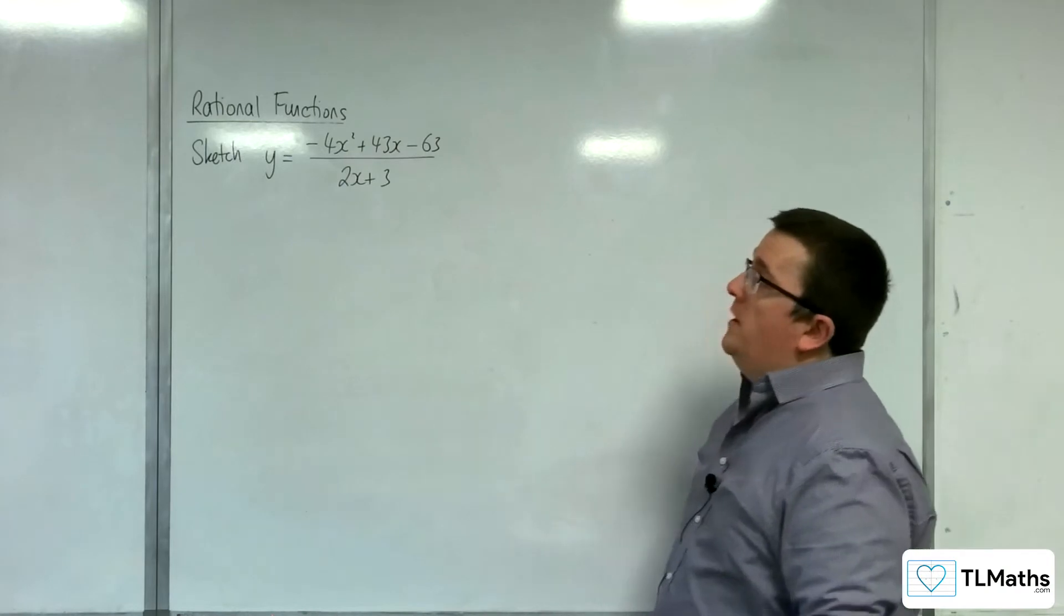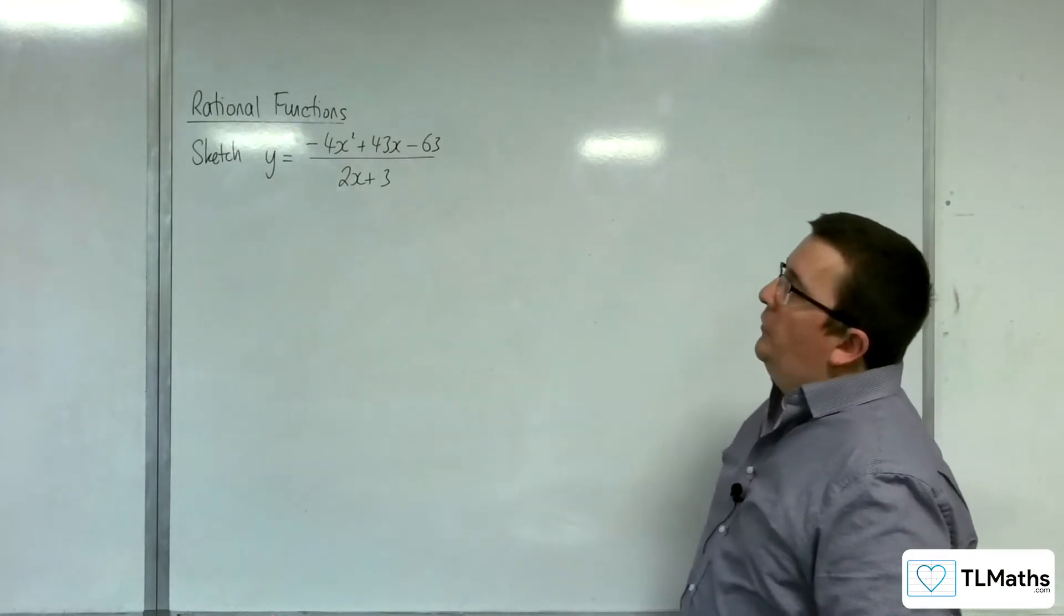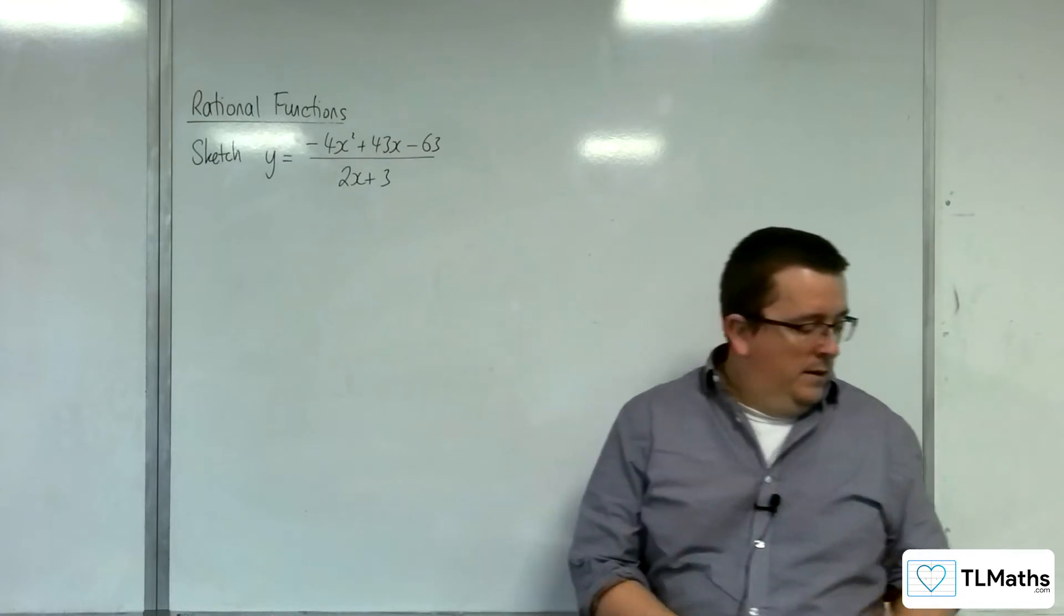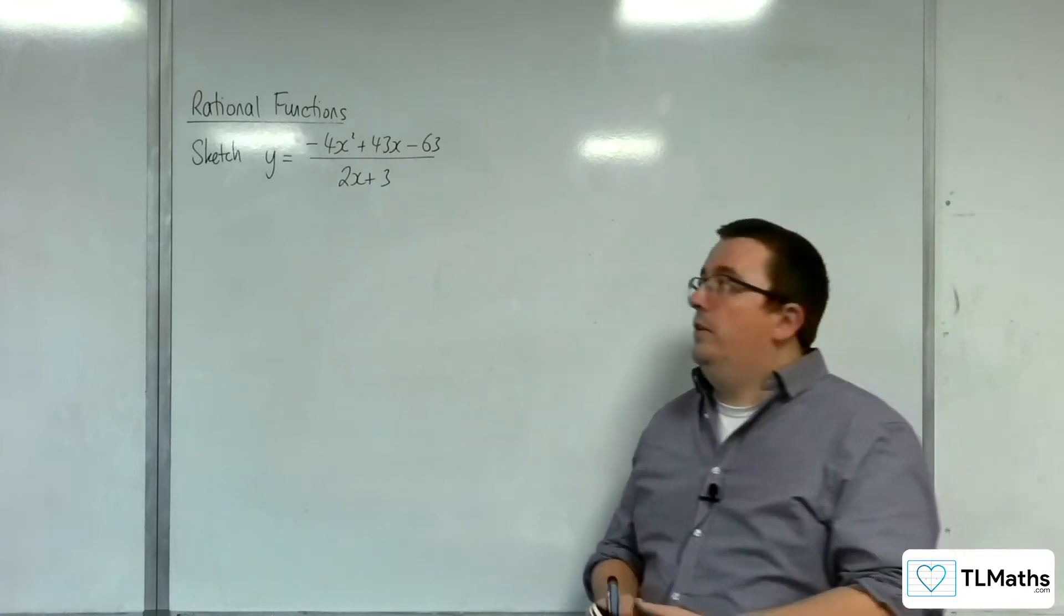In this video I'm going to be sketching y equals minus 4x squared plus 43x take away 63 over 2x plus 3. Right, let's try and factorize that numerator.